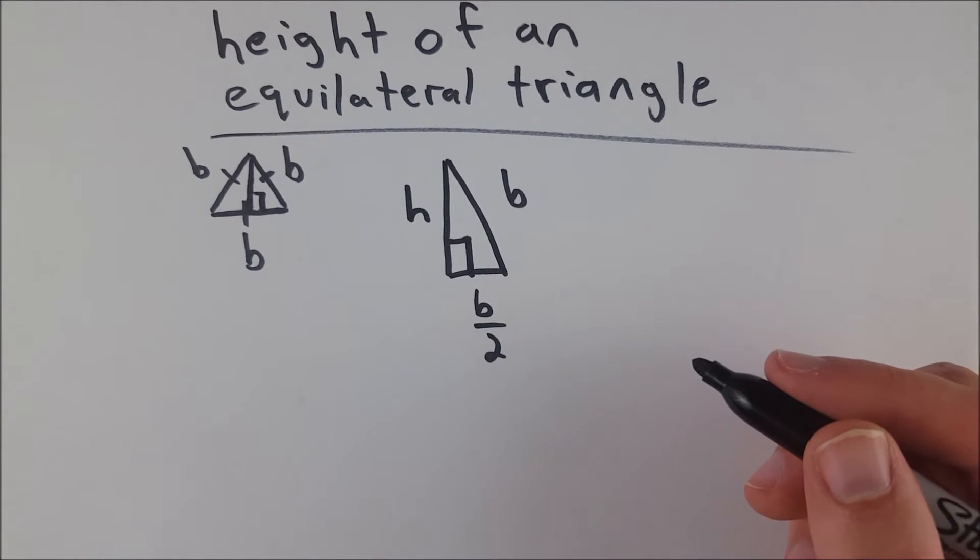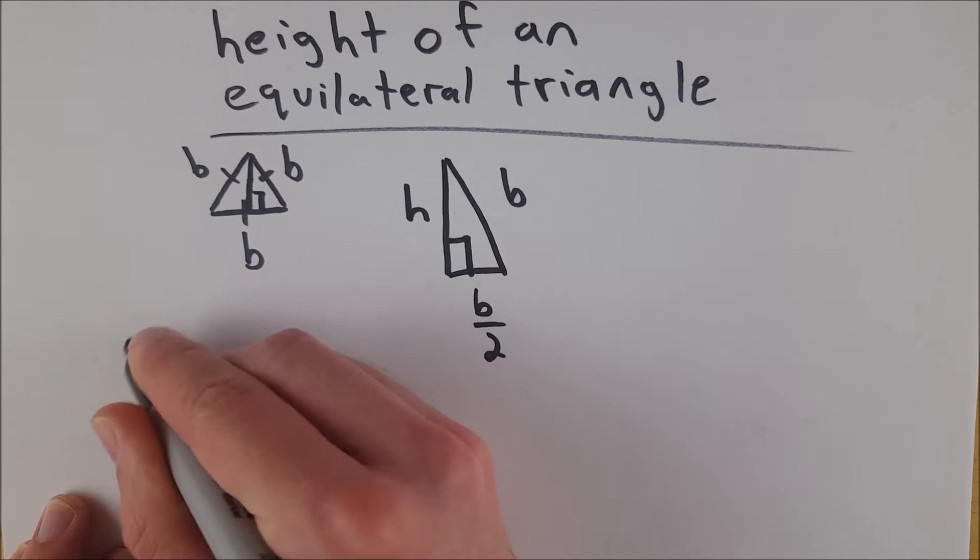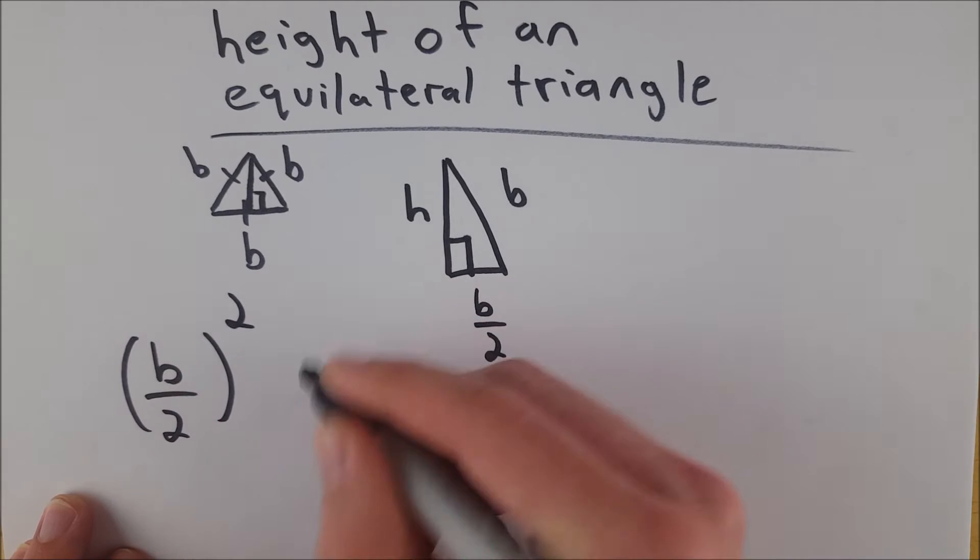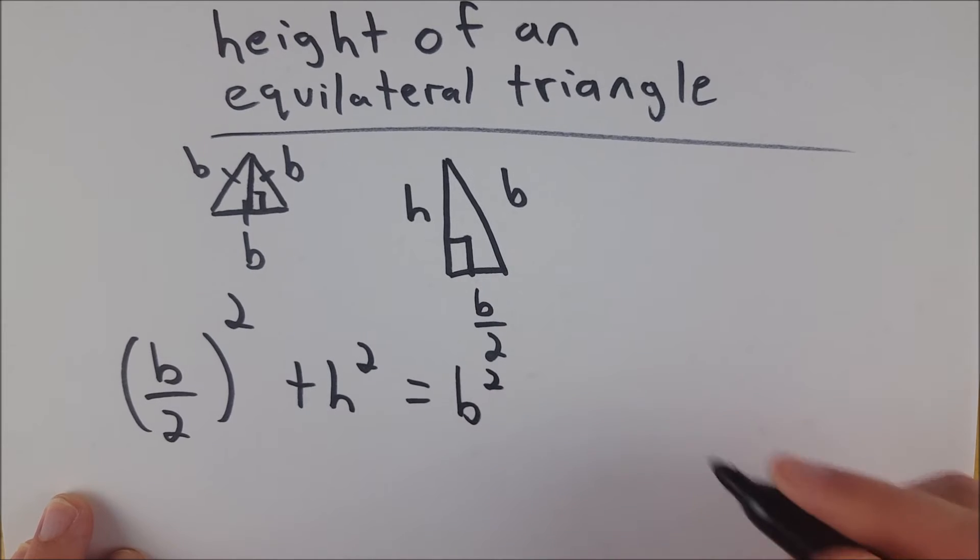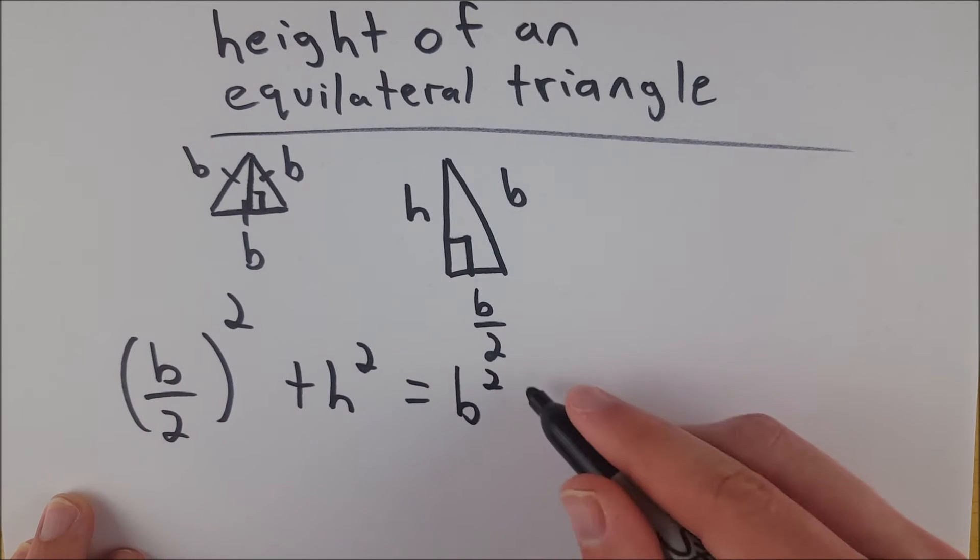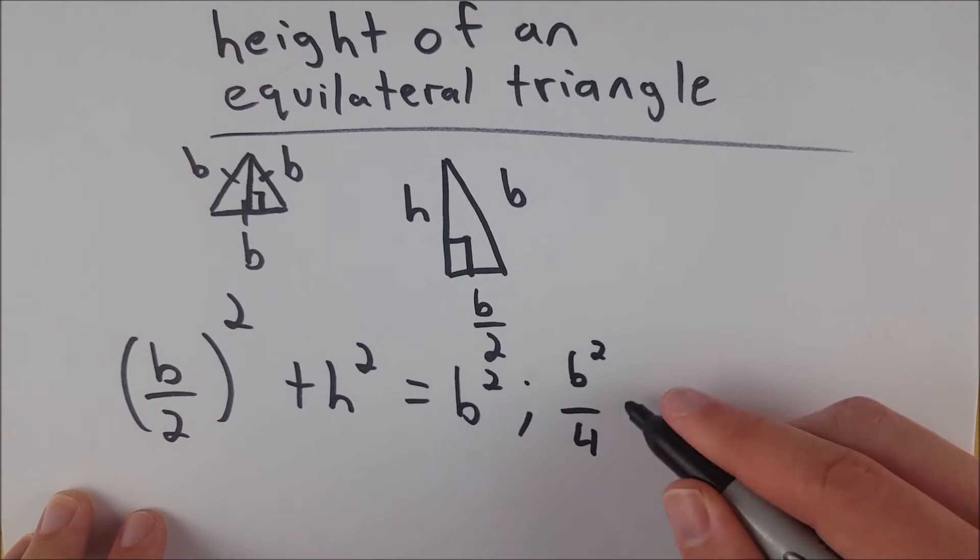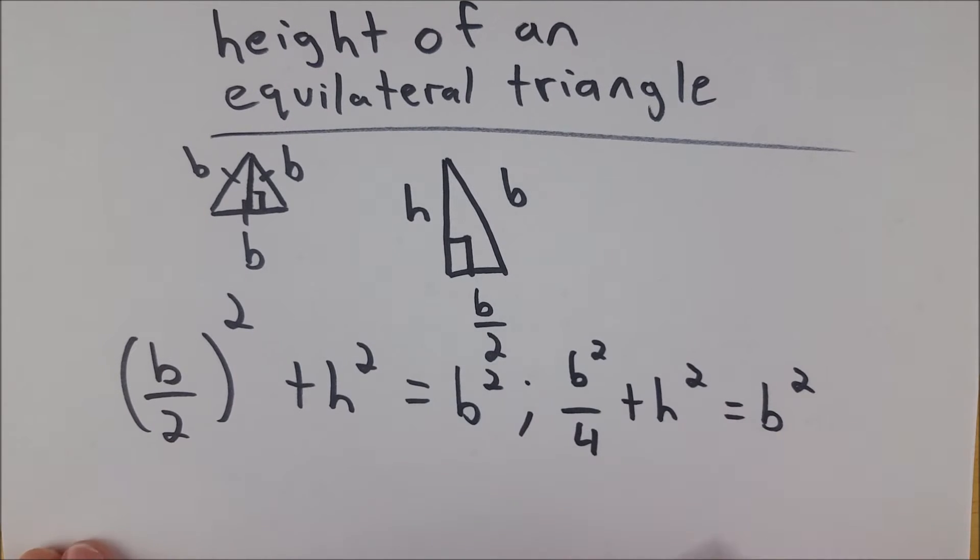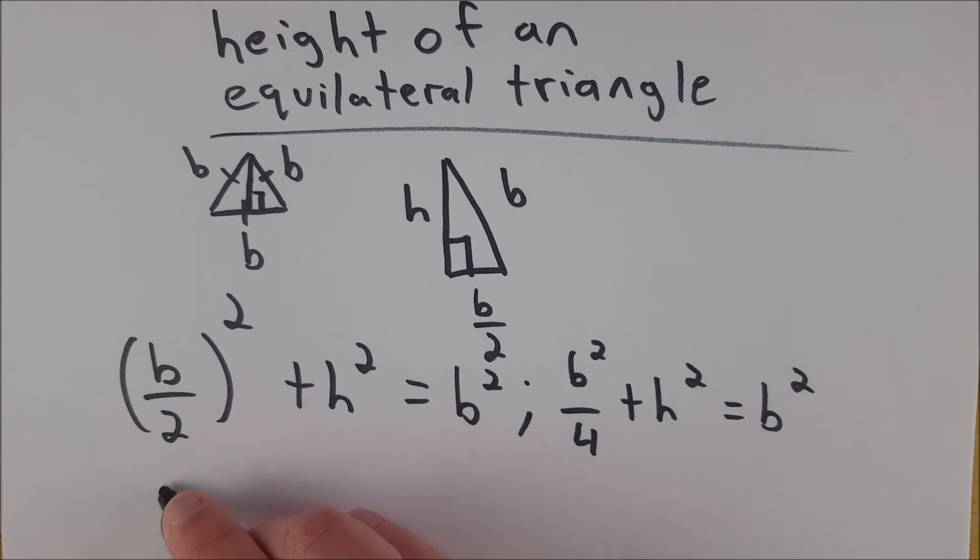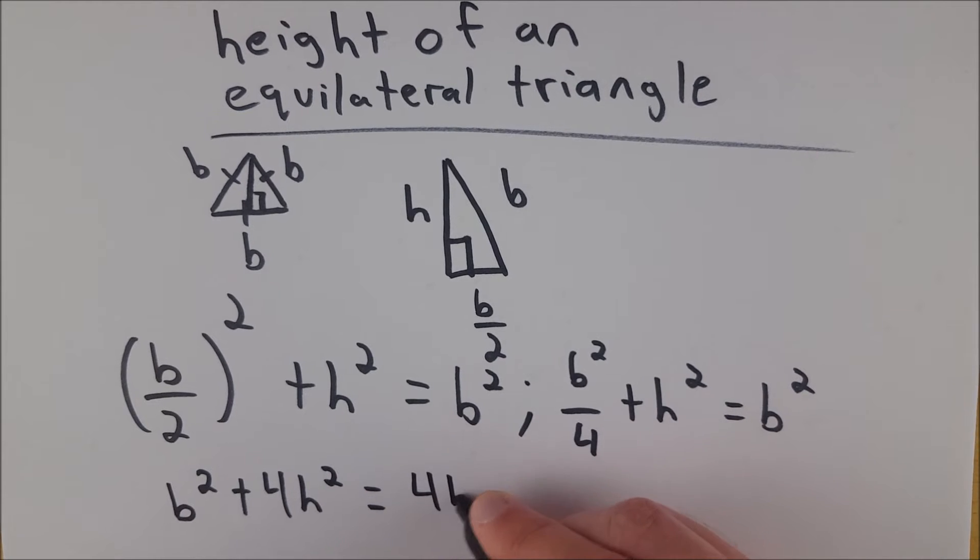So then we can just use the Pythagorean theorem to have B divided by two, all squared, plus H squared, equal to the square of the hypotenuse, which is B squared. And now we can do this out. We'll get B squared divided by four, squaring the numerator and denominator, plus H squared equals B squared. Then we multiply everything by four to get rid of the fraction, and that leaves us with B squared plus four H squared equals four B squared.